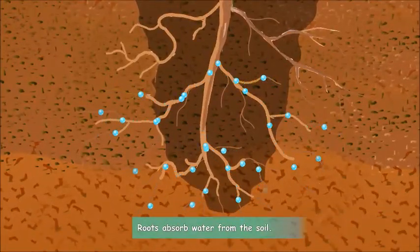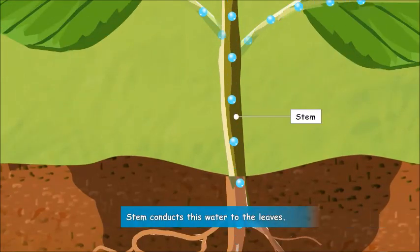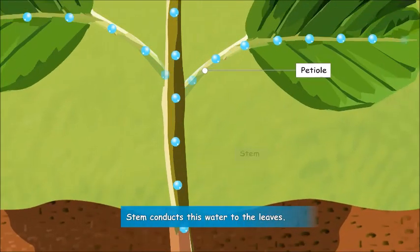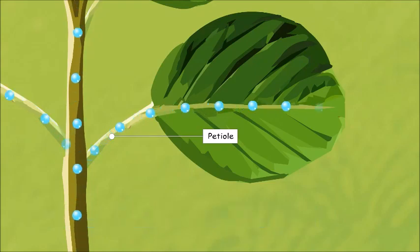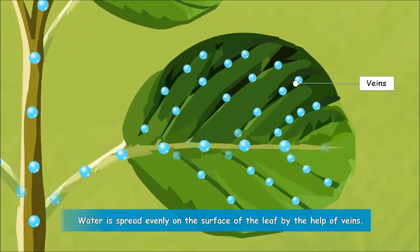Water from the soil is absorbed by the roots of the plant. From roots, water travels through the stem to the petiole and then to the leaves. The water is distributed to the entire surface of leaves by the veins.